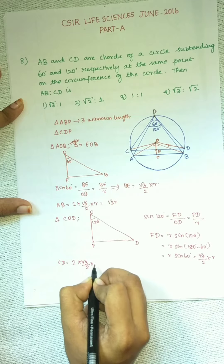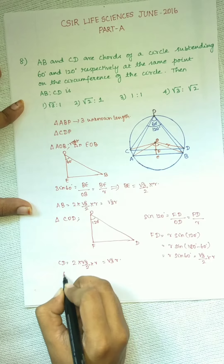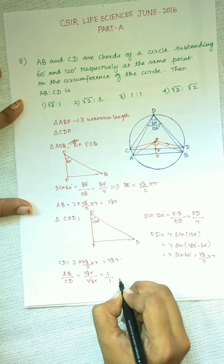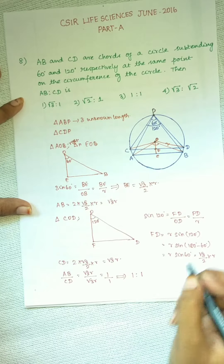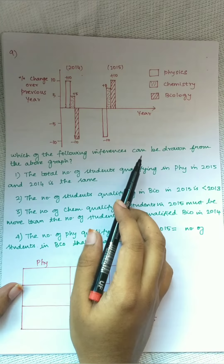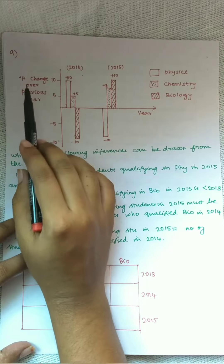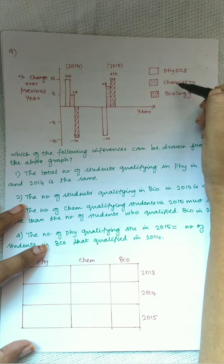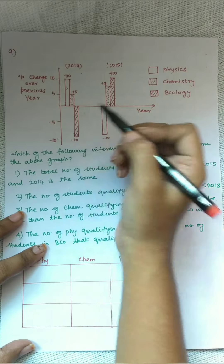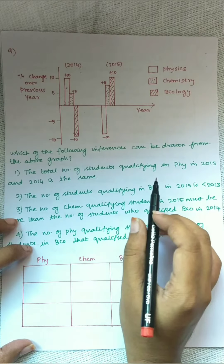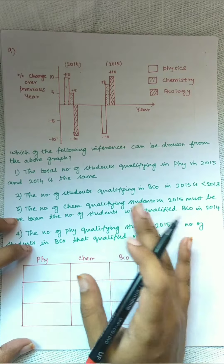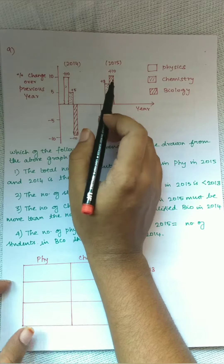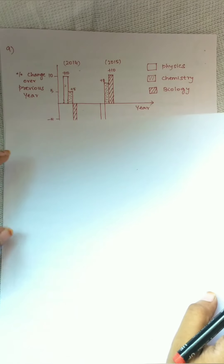This is AB. Now taking triangle COD, and in that taking the right angle triangle — the angle at center doubles the inscribed angle, so it is 240 degrees here. Let this point be F, so we have triangle OFD. This angle is 240, so half of 240 is 120. We need DF. By Pythagoras theorem, sin 120° equals opposite FD over hypotenuse OD. OD equals R, the radius, and FD is what we have to find. So FD equals R × sin 120°.